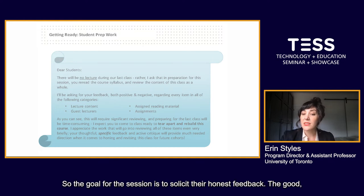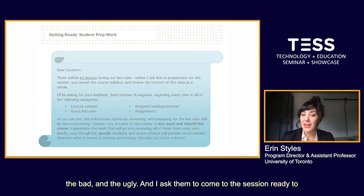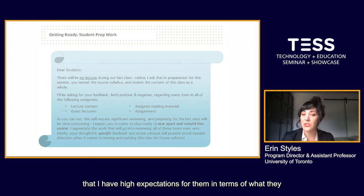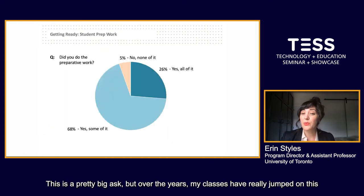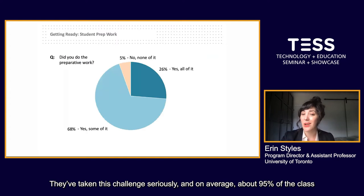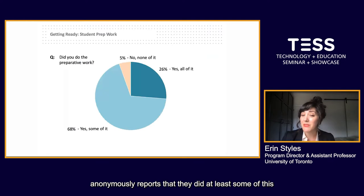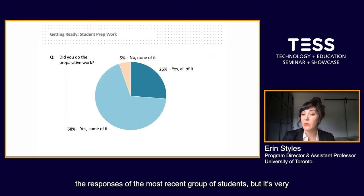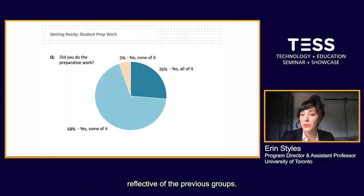The goal for the session is to solicit their honest feedback — the good, the bad, and the ugly — and I ask them to come ready to tear the class apart and rebuild it. This prep message lets the class know that I have high expectations for what they are going to bring into this last session. This is a pretty big ask, but over the years my classes have really jumped on this as an opportunity for student activism in the classroom. They've taken this challenge seriously, and on average about 95% of the class anonymously reports that they did at least some of this intensive preparative work. This graph on the screen right now represents the responses of the most recent group of students, but it's very reflective of the previous groups.